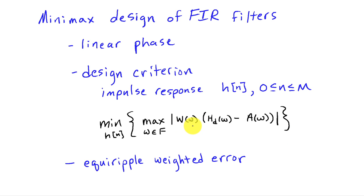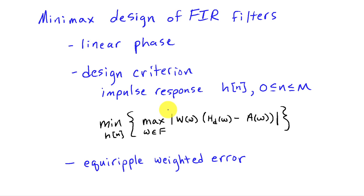The weighting function allows us to emphasize error in different bands in a different manner. For example, we may wish to have the stop band have smaller ripple and thus greater attenuation than the ripple that we naturally get when we assume that the error is equal between the pass and the stop band. Once you solve this design criteria, it turns out that we obtain a filter that has equal ripple weighted error. This cost — the part that we're minimizing the largest value of — has equal ripple across the entire set of frequencies F.